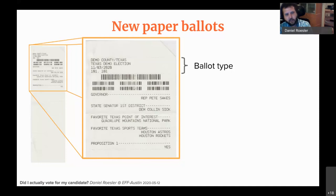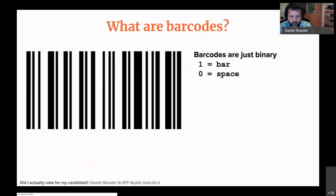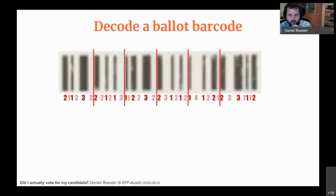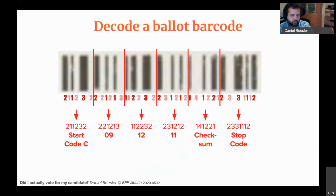The big top barcode doesn't contain identifying information about you but does contain your ballot style — what the election is and the ballot style given. Also, barcodes have a checksum: a formula taking the start code through the checksum, computed modulo 103. If a bar is misplaced, the barcode will not read because the checksum won't pass.